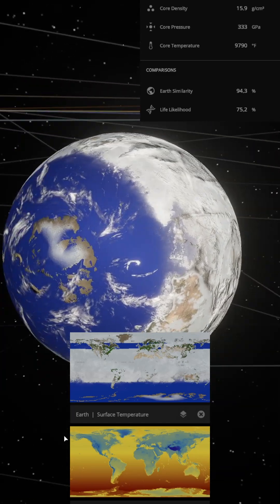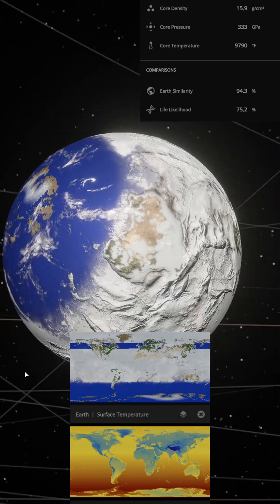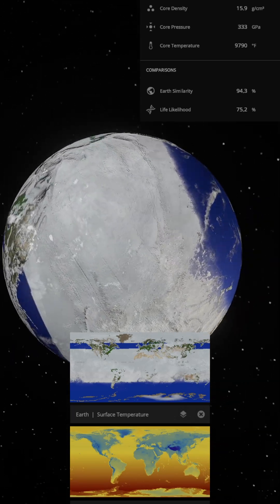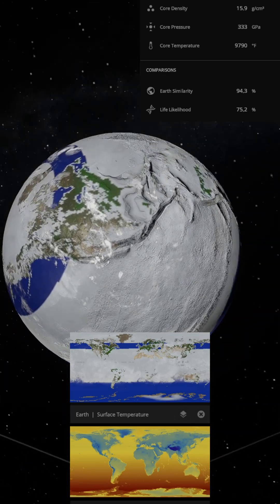Earth rotates alone in space, half scorched, half frozen. A tilted Earth is no longer a cradle of life, but a planet trapped in an extreme cycle of heat and cold.